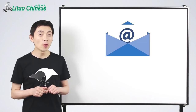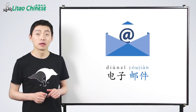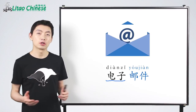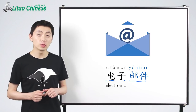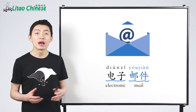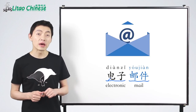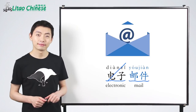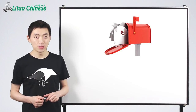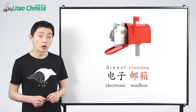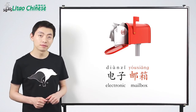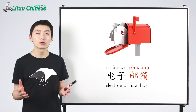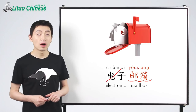Email，用汉语，我们说电子邮件。电子是electronic，邮件是mail。If the context is clear, you can omit 电子, just say 邮件 for email. Email box，用汉语，我们说电子邮箱。邮箱是mailbox。